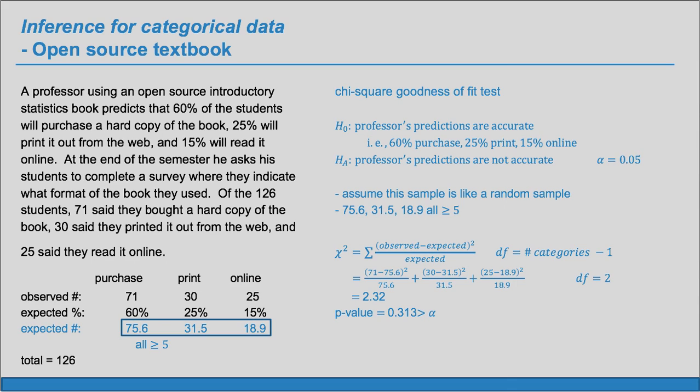And now this p-value is big. It's bigger than alpha. And so we do not reject H sub 0. If we do not reject H sub 0, we do not have evidence for H sub A. Which is to say we do not have evidence that the professor's predictions are inaccurate. So these observed values are within the realm of chance variation from those expected percents. So we do not have sufficient evidence to say the professor's predictions are clearly inaccurate.